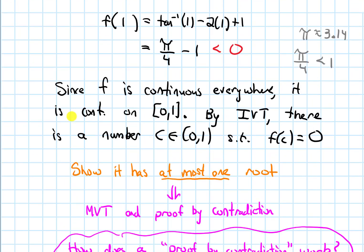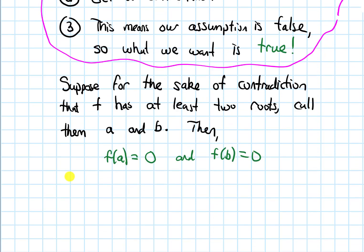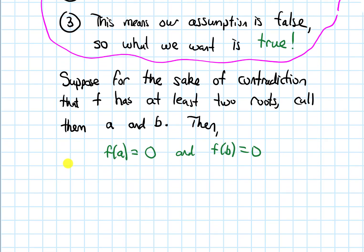If I draw a picture of what we have so far: I'll draw some axes, place a here and b here. What I'm assuming is that f(a) = 0 and f(b) = 0, so both points sit on the x-axis. I want to show that such a situation is impossible. Also, since we're assuming at least two roots, a and b are different — otherwise we'd have just one root.